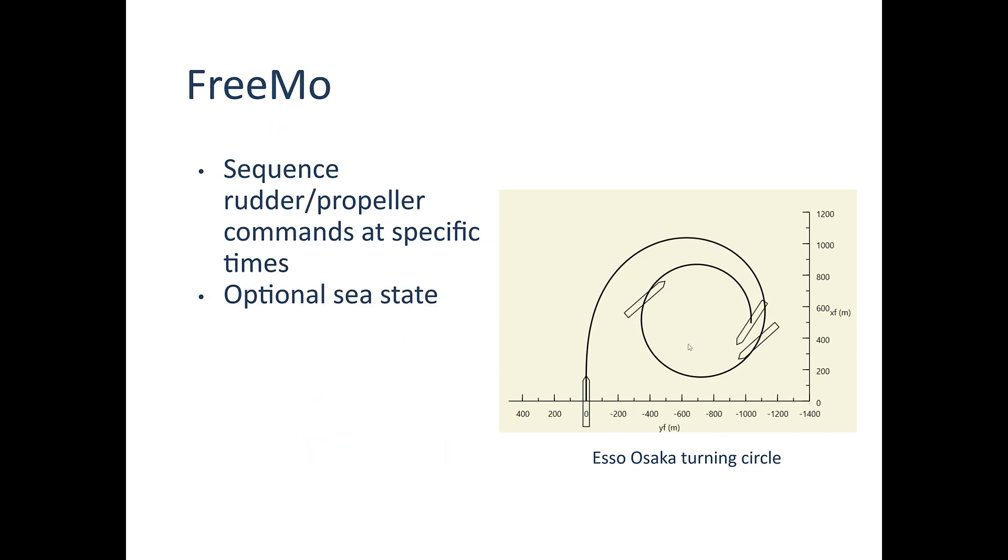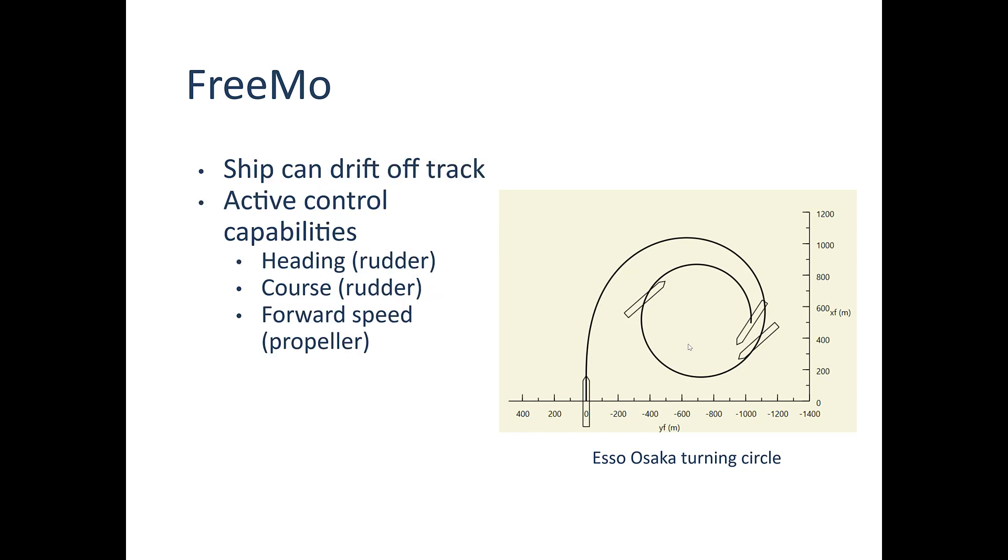The only time domain capability in ShipMo3D is in the application FreeMo. Very generally the way you use it is you key up maneuver inputs at specific points in time. What you want to have happen at this elapsed time, turn the rudder over this way at this many degrees and so on. You can turn on a sea state as well, but you can also run analysis in calm conditions.